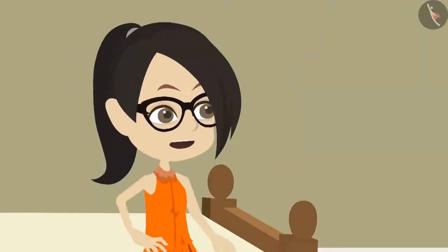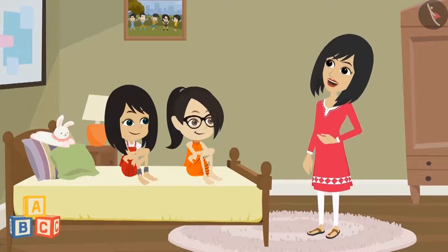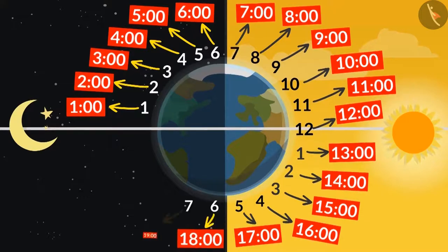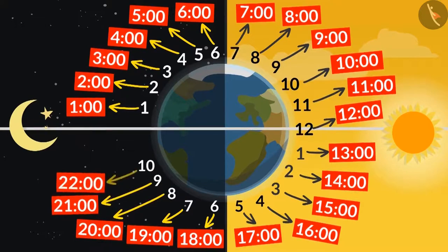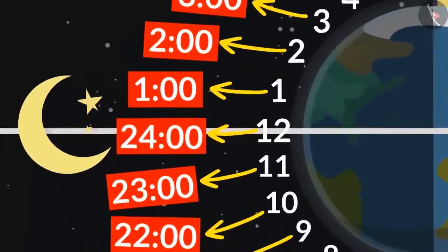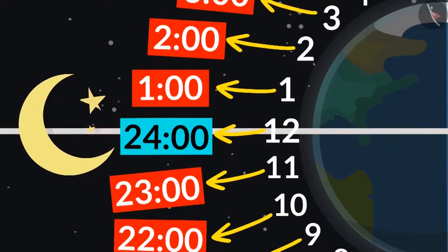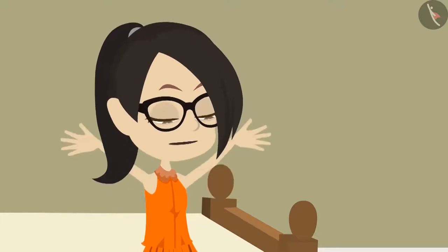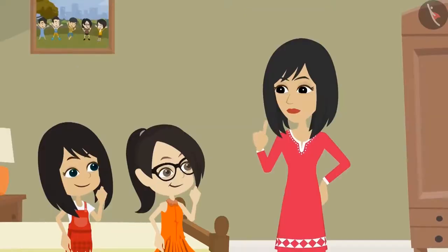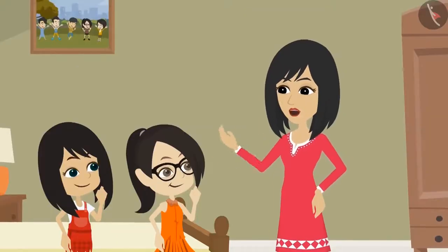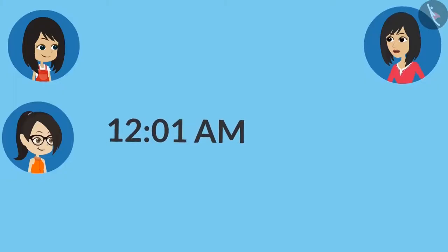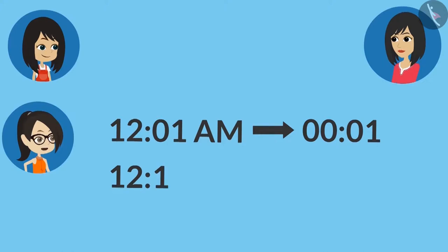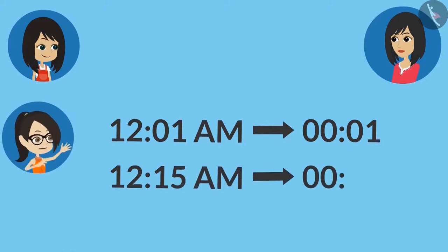Then how will we write 12 o'clock at night? Why don't you try it yourself? Okay. If 5 o'clock in the evening is 17, then 6 will be 18, 7 will be 19, 20, 21, 22, 23, 24 — that is, 12 o'clock at night will be written as 24:00. You found it correctly, Neha. If it is 15 minutes past 12 o'clock at night, then how will we write it? 24:15? No — after 12 o'clock at night, time starts from 0. So if you want to write 1 minute past 12 o'clock, 00:01 will be written. That means 15 minutes past 12 o'clock at night will be written as 00:15 in the 24 hour format.